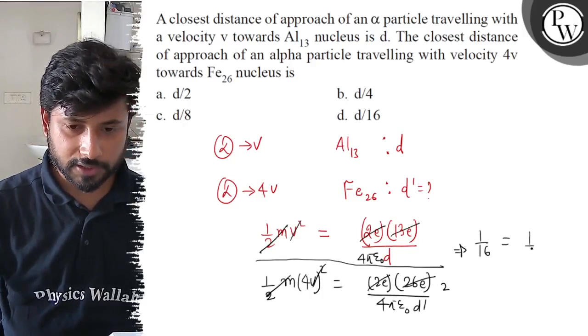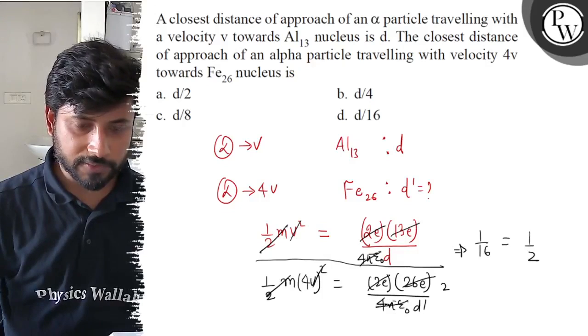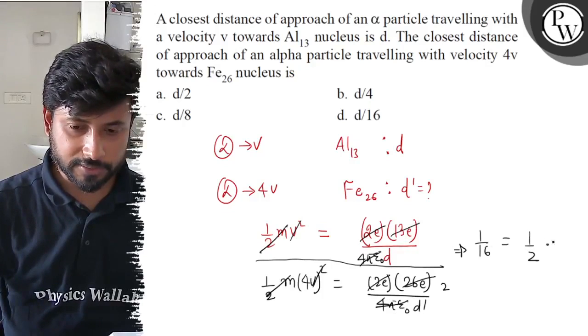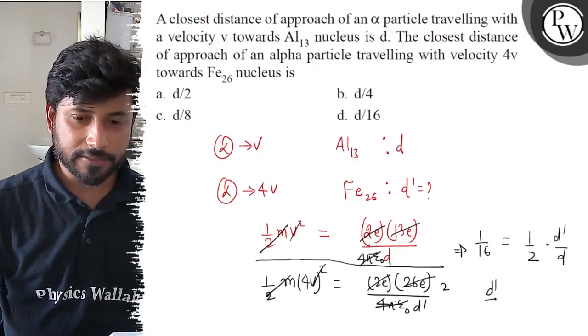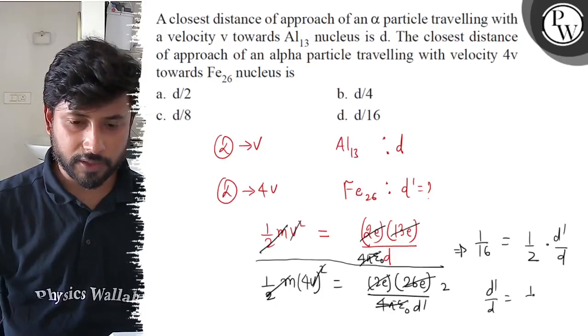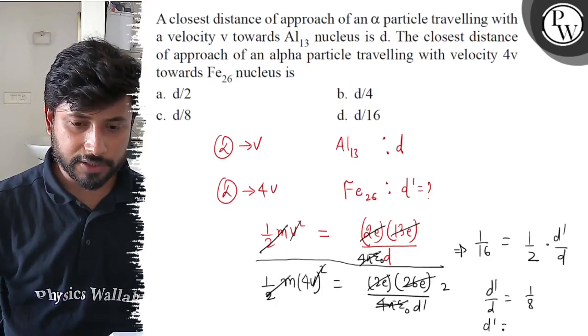After simplification, we have D'/D = 1/8, so D' = D/8.